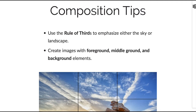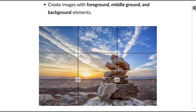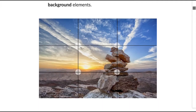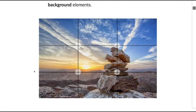Another tip is to create images with foreground, middle ground, and background elements. The rule of thirds means you take your frame and divide it up into thirds, kind of like a tic-tac-toe grid, and you put important elements along any of these lines or at the intersections of these lines.